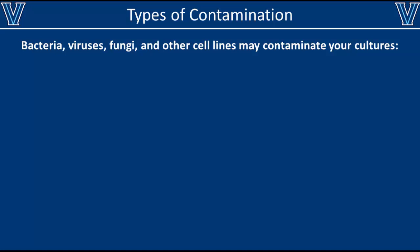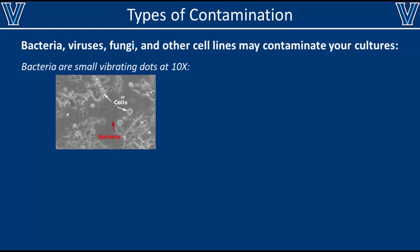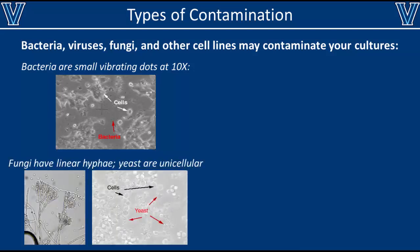Bacteria, viruses, and fungi are some common contaminants found in every lab. Bacteria are very small contaminants that can't be seen with the naked eye, but they can barely be seen with a light microscope at 10x magnification. As you can see, the bacteria are much smaller than the animal cells. If you were watching these cells in real time, you would know that the black dots were live bacteria because they would be actively moving and vibrating.